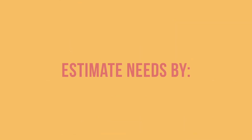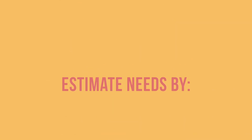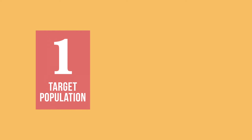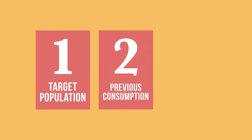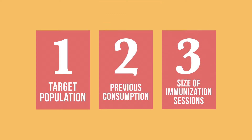There are three main methods for estimating vaccine needs: by target population, by previous consumption, and by the size of immunization sessions. This video provides an overview of each method, the advantages and limitations of each, and when it is best to use each one.